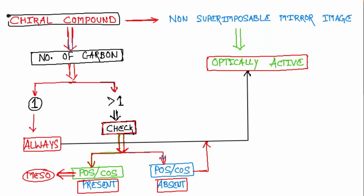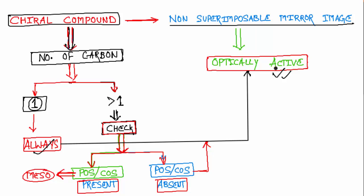In a nutshell, to find a chiral compound: a chiral compound has a non-superimposable mirror image and will be optically active. If the number of chiral carbons is one, it will always be optically active. If the number of chiral carbons is greater than one, check for a plane of symmetry or center of symmetry — if present, it is a meso compound; if absent, it will be optically active.